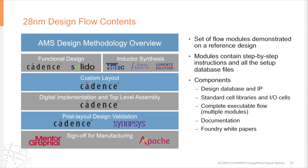In conclusion, this 28 nanometer design flow is available for download from Global Foundries. It's a set of individual flow modules demonstrated on this reference design, each containing step-by-step instructions and all setup database files. You can download the design database and IP, standard cell libraries used in the digital implementation, I/O cells, detailed documentation, and foundry white papers covering specific topics such as layout-dependent effects.